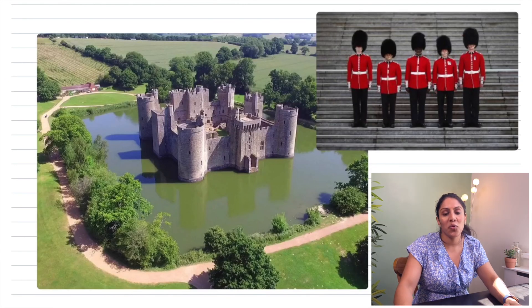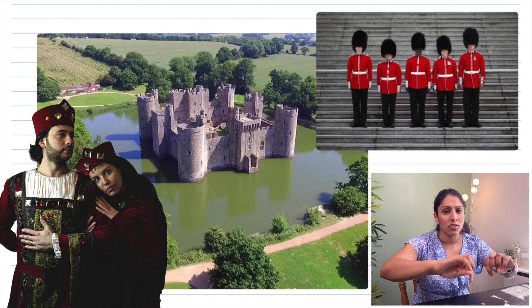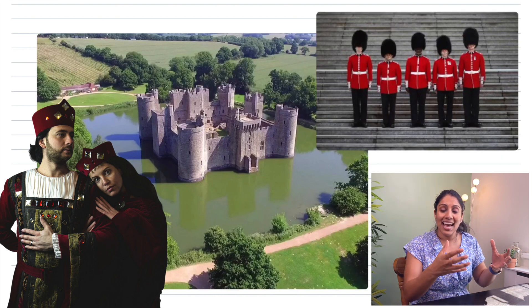Let's go back in history to when castles were designed to protect kings and queens. They had moats around the castle — lots of water — to make it really difficult for invaders to get in. This moat was like a first line of defense. If an invader got through and found an entry point, guards would search for them — a second line of defense — and put them in prison or kill them.